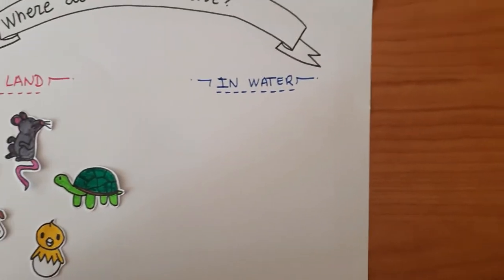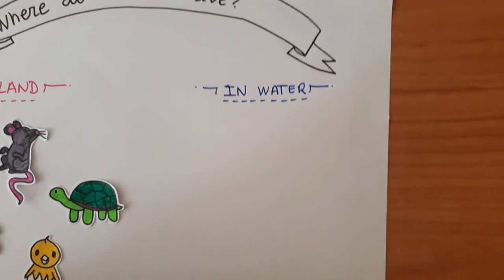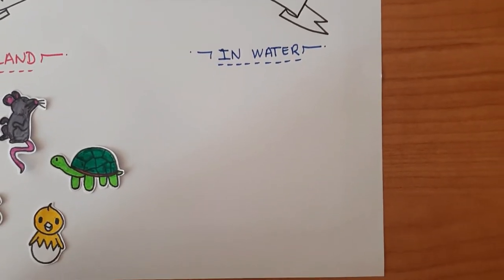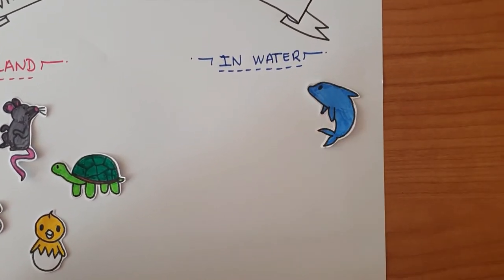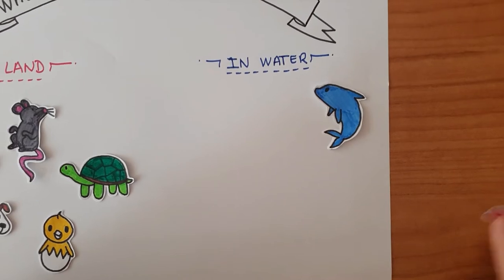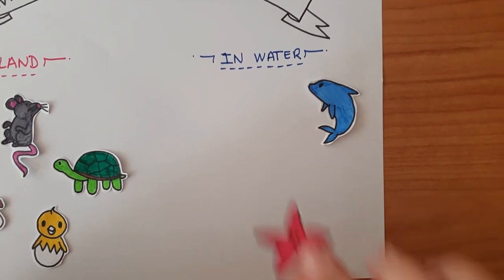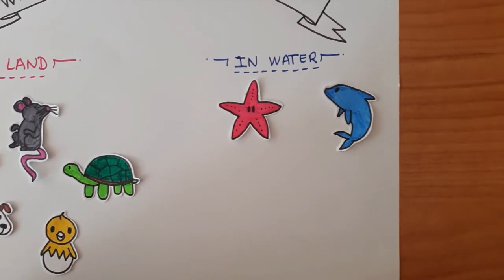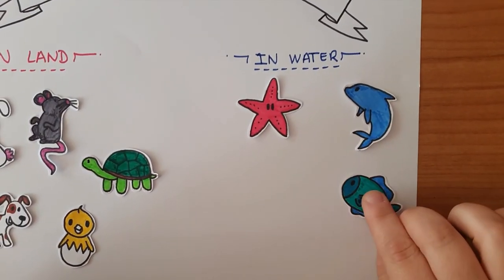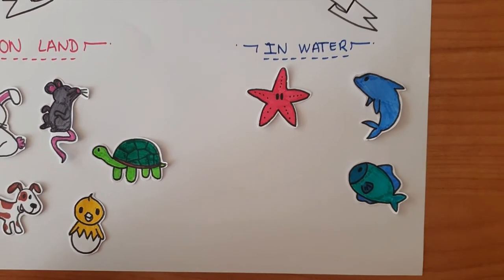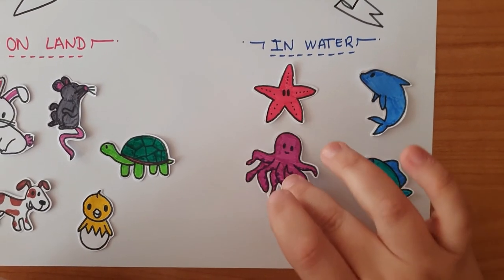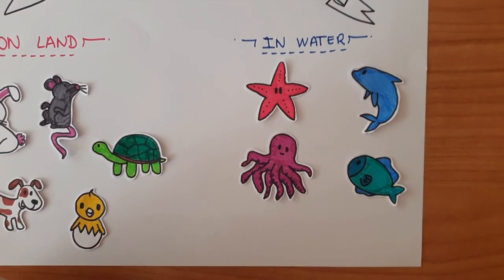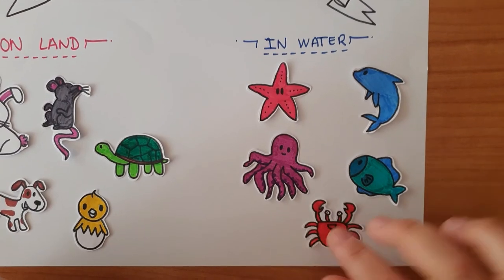The other animals that live in water are the dolphin, the starfish, the fish, the octopus, and the crab.